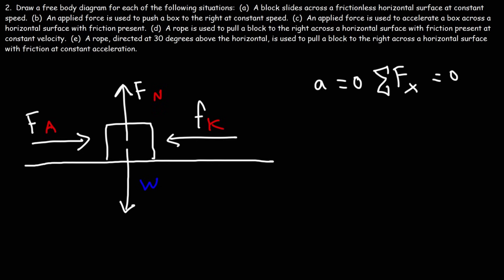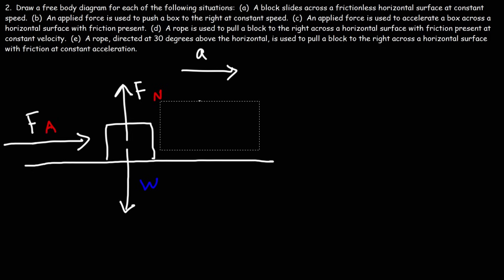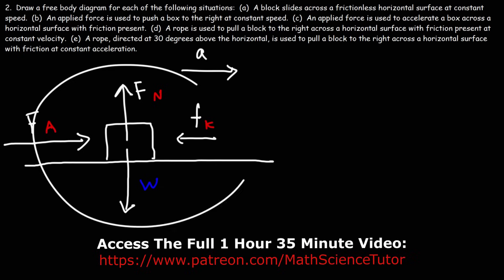For part C, an applied force is used to accelerate a box across a horizontal surface with friction present. This time, the box is not moving at constant speed — it's accelerating, so the acceleration is not zero. Because we have an acceleration, there's going to be a net force to the right. The only way that's going to happen is if the applied force is greater than fk. Kinetic friction must be relatively small compared to the applied force so that we can have a net acceleration to the right.